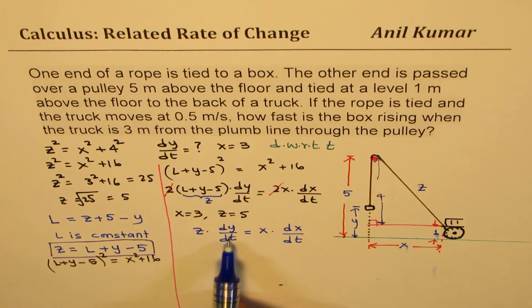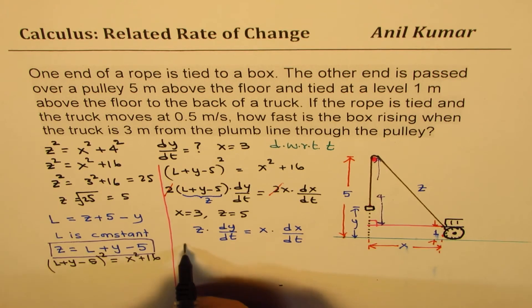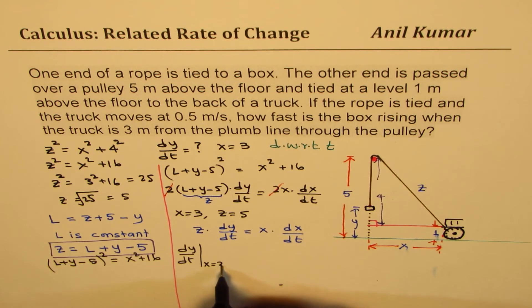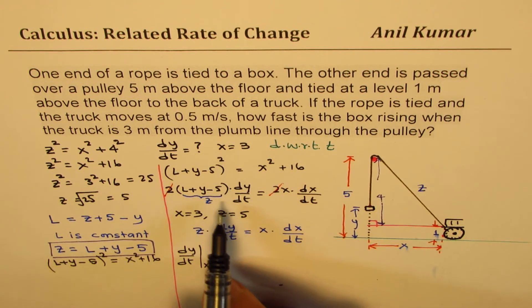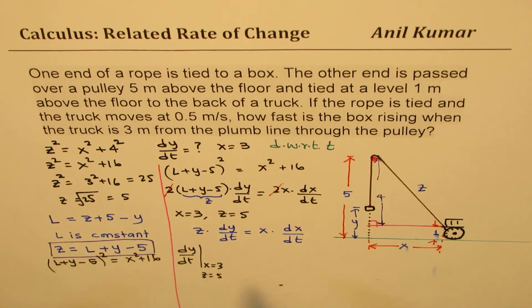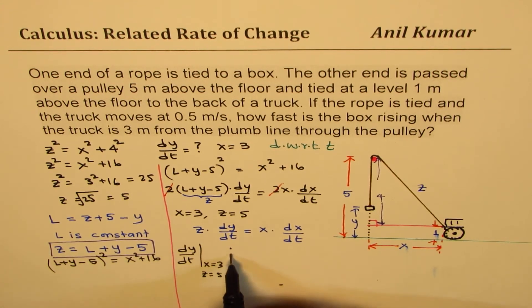So basically, the equation here is Z times dy/dt equals X times dx/dt. You understand that part? Now we can find dy/dt. So let's find dy/dt when X equals 3. So when X equals 3, we know Z is 5. So let's substitute these values.